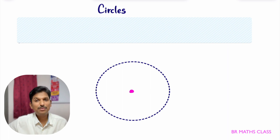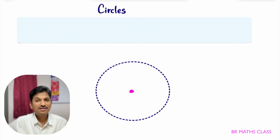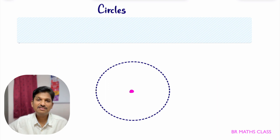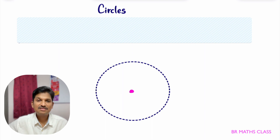Hello everyone, I am Balaji Rao. Welcome to BR Maths class. This is the first class of the conic section chapter. Conic section is mainly divided into four concepts: circles, parabola, ellipse, and hyperbola. In this class, we will learn the theory part related to circles.